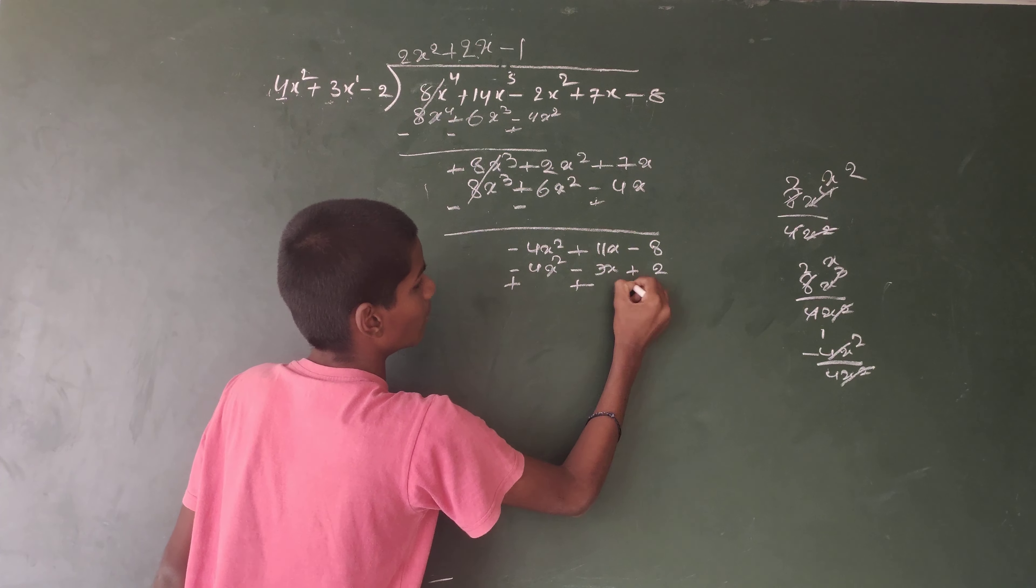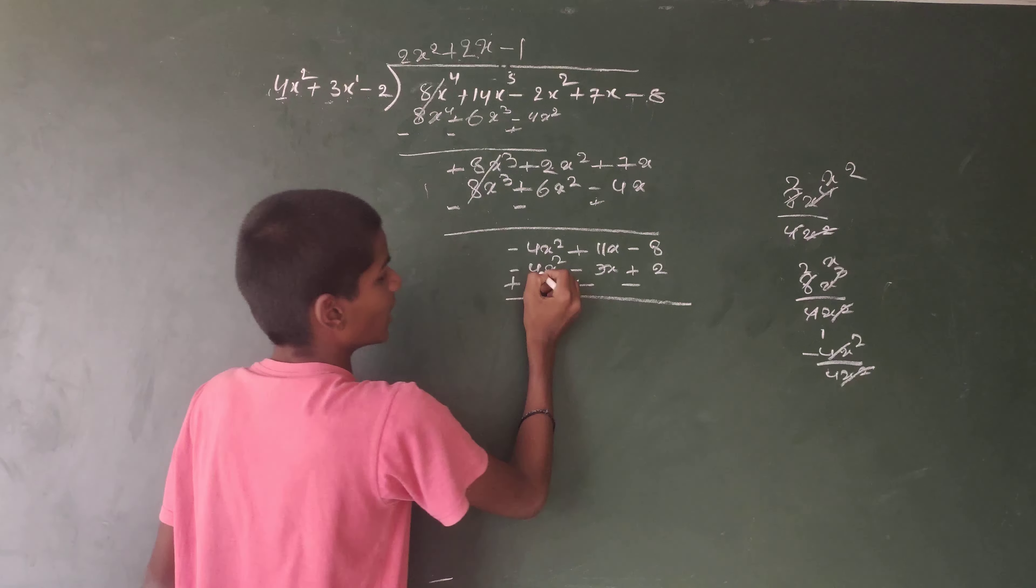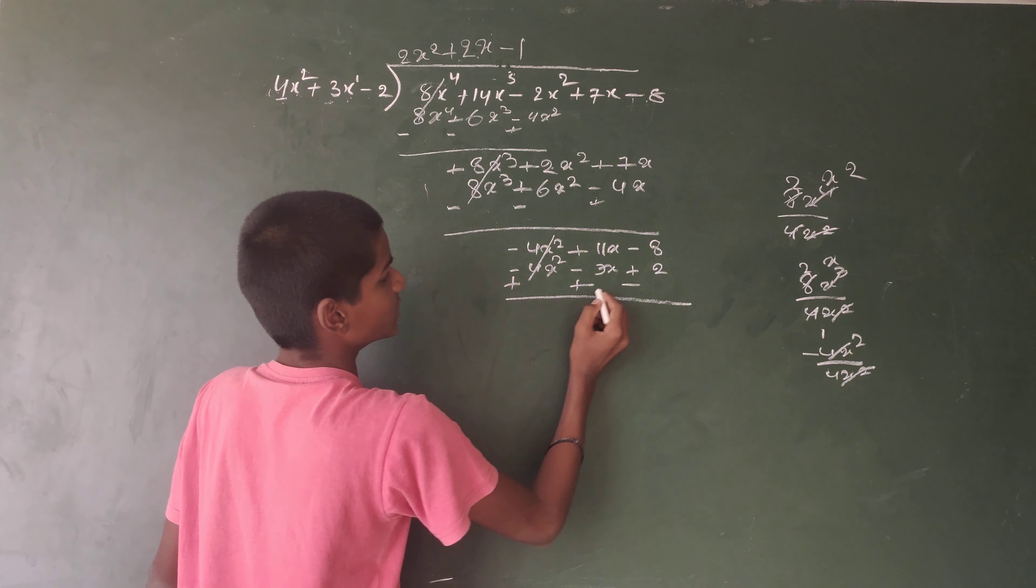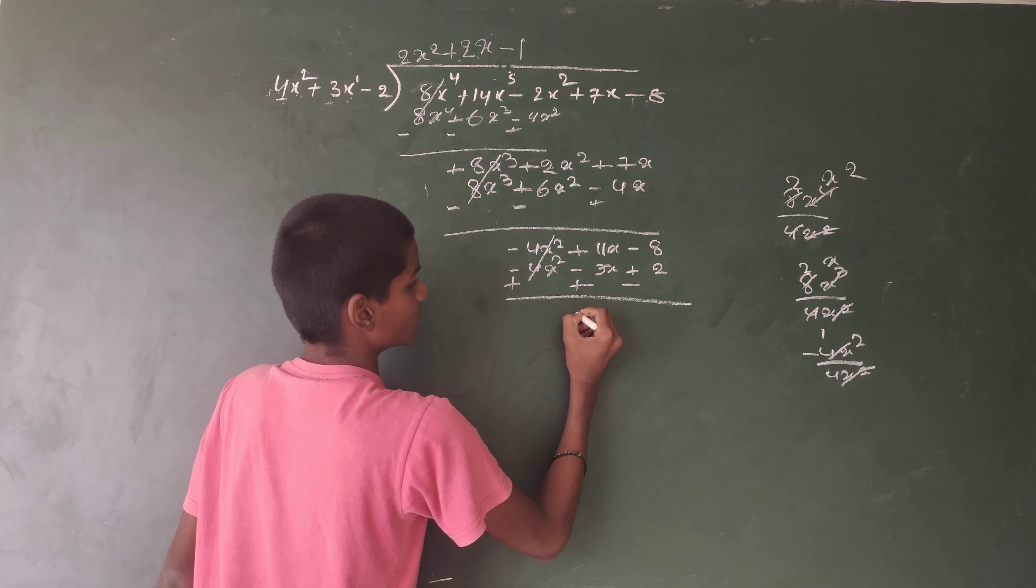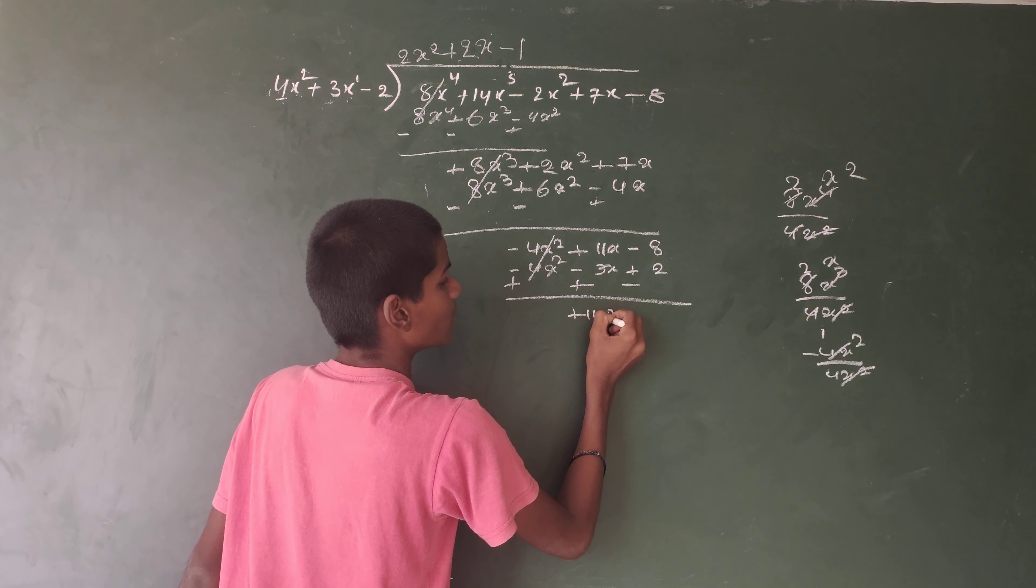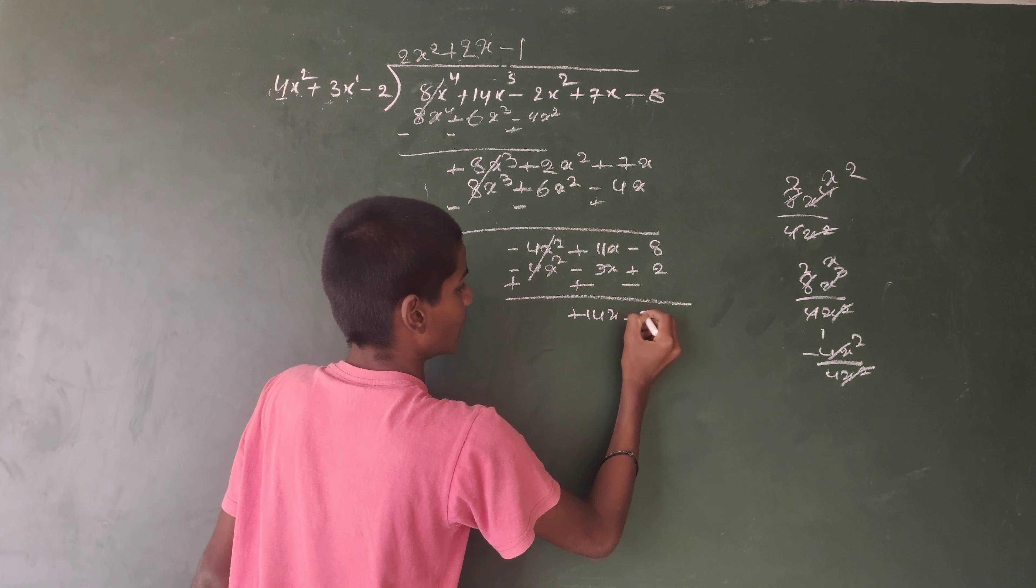Plus minus becomes minus. Plus 4x² minus 4x² cancel. Plus 3x plus 11x is plus 14x. Minus 2 minus 8 is minus 10.